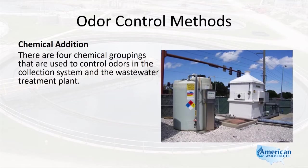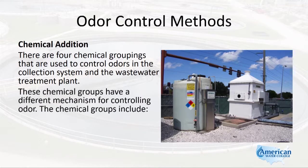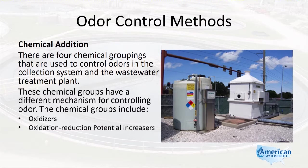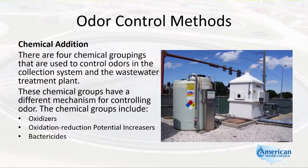There are four chemical groupings that are used to control odors in the collection system and the wastewater treatment plant. These chemical groups have a different mechanism for controlling odor, and these chemical groups include oxidizers, oxidation reduction potential increasers, bactericides, and pH modifiers.